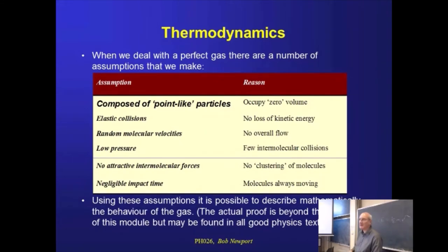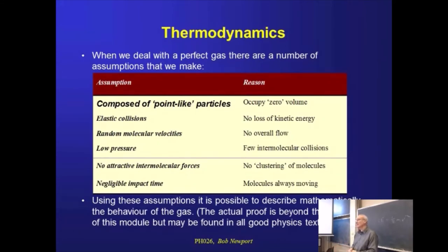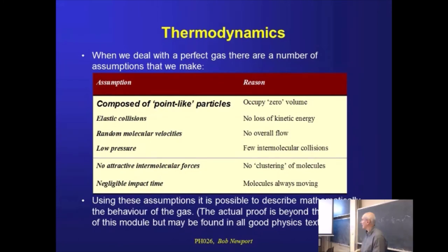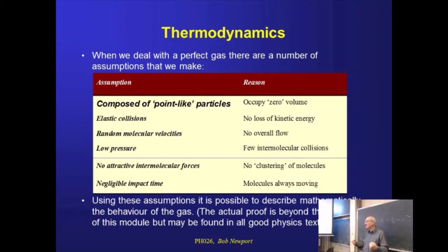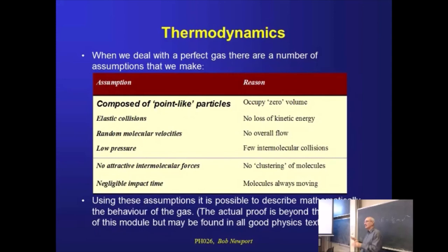We're also going to assume that we're working at low pressures — and by low pressures I'm really saying the absence of high pressure. Atmospheric pressure is still relatively low. The lower the pressure, the lower the number of gas molecules per unit volume, and so that initial point-like particle assumption becomes more and more valid. We're also going to assume that our impact time can be ignored — if two molecules come together, stick for a bit, wobble around and then come apart, we'd have a problem. So all we're doing is saying this is definitely more like a game of billiards than throwing lumps of adhesive material together.